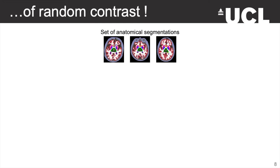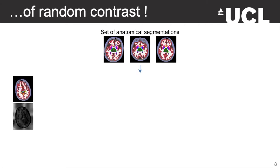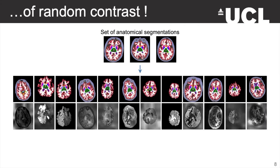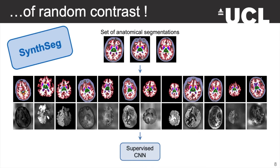Our generative model starts with a set of anatomical segmentations — and I insist on the fact that we don't need images, only segmentations. From those, we generate a lot of images with corresponding segmentations. Crucially, those images are of random contrast. Moreover, for each image, we apply a random subset of pre-processing operations like bias field correction, skull stripping, or background removal. Finally, we take all these images and train a network with them in a supervised fashion. We call this method SynthSeg.